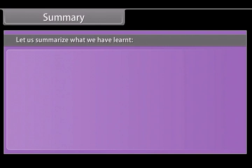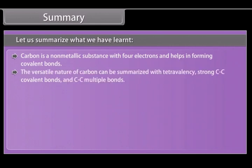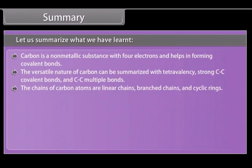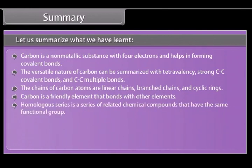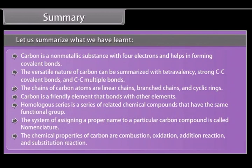Summary. Let us summarize what we have learned. Carbon is a non-metallic substance with four electrons and helps in forming covalent bonds. The versatile nature of carbon can be summarized with tetravalency, strong carbon-carbon covalent bonds and carbon-carbon multiple bonds. The chains of carbon atoms are linear chains, branched chains and cyclic rings. Carbon is a friendly element that bonds with other elements. Homologous series is a series of related chemical compounds that have the same functional group. The system of assigning a proper name to a particular carbon compound is called nomenclature. The chemical properties of carbon are combustion, oxidation, addition reaction and substitution reaction.